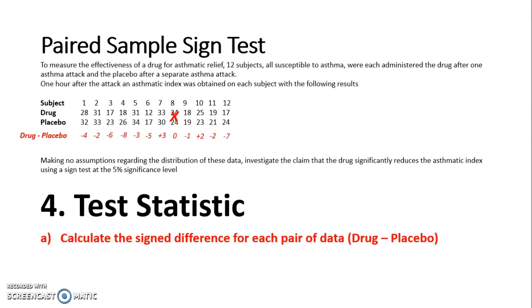And then the reason I have crossed out subject 8 is because they have a difference of zero. And just like with my sign test, if I have a difference of zero, I cannot use that to help me establish the significance of this data because it's neither above nor below. So I discount subject 8.